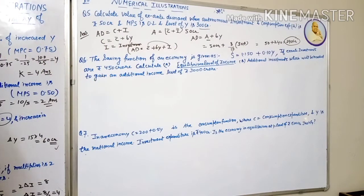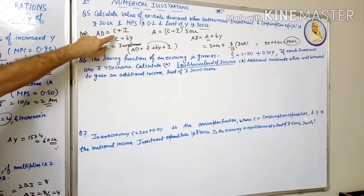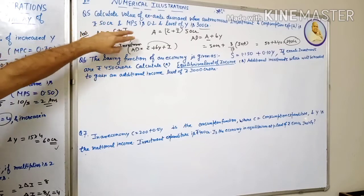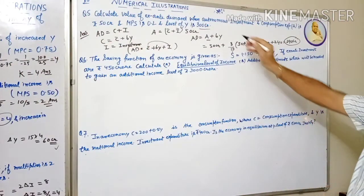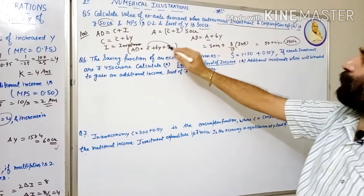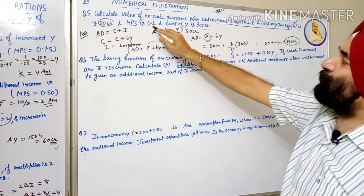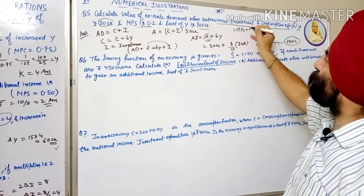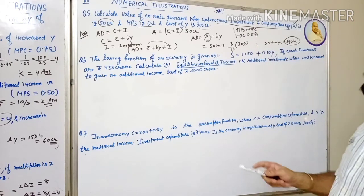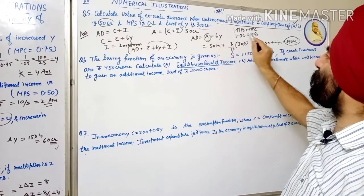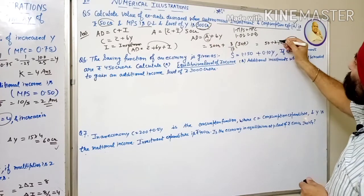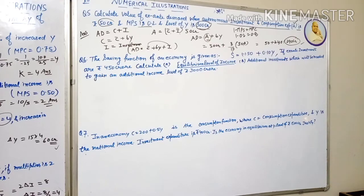फिर से सुनो: Aggregate demand = C + I, जहाँ C = C̄ + BY (autonomous consumption + MPC into income) and I = autonomous investment। C̄ और I दोनों की value = 50 करोड़ (capital A से denote किया)। MPS = 0.2 है, so MPC = 1 minus 0.2 = 0.8। AD = 50 + 0.8 × 300 = 290 करोड़।